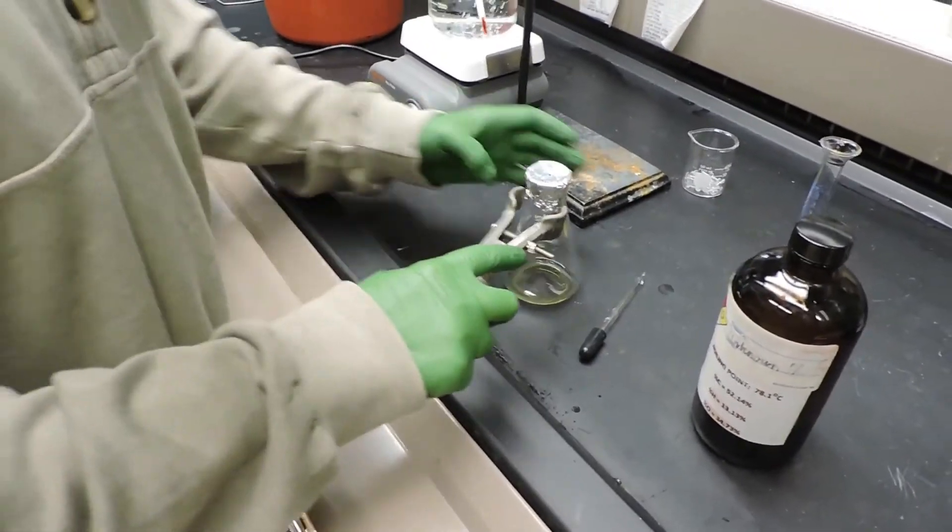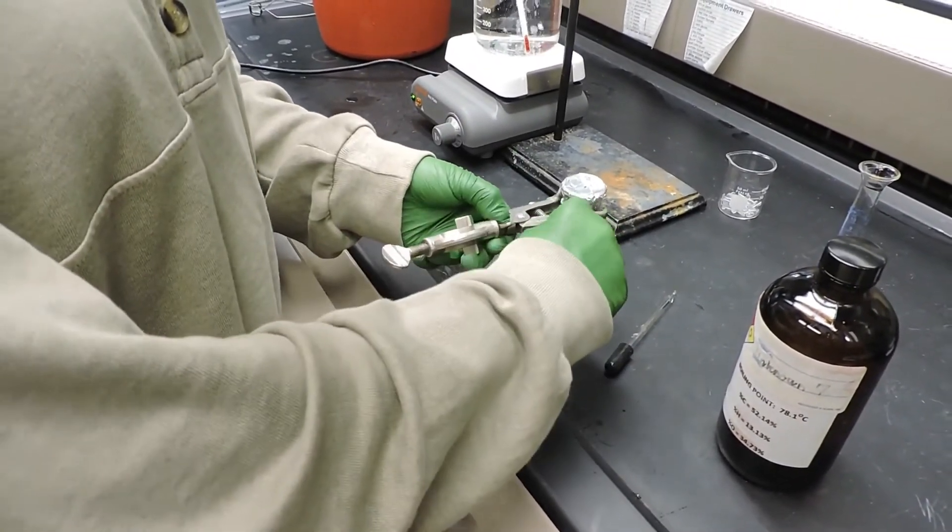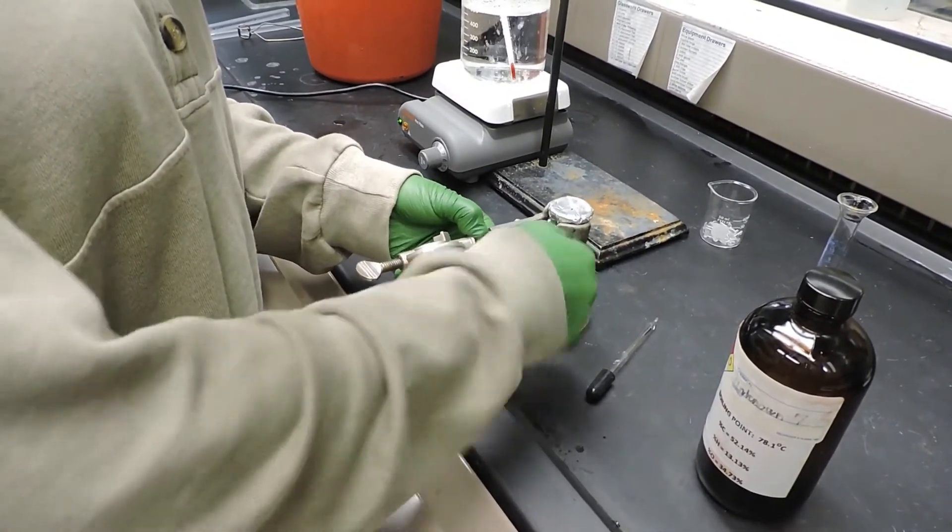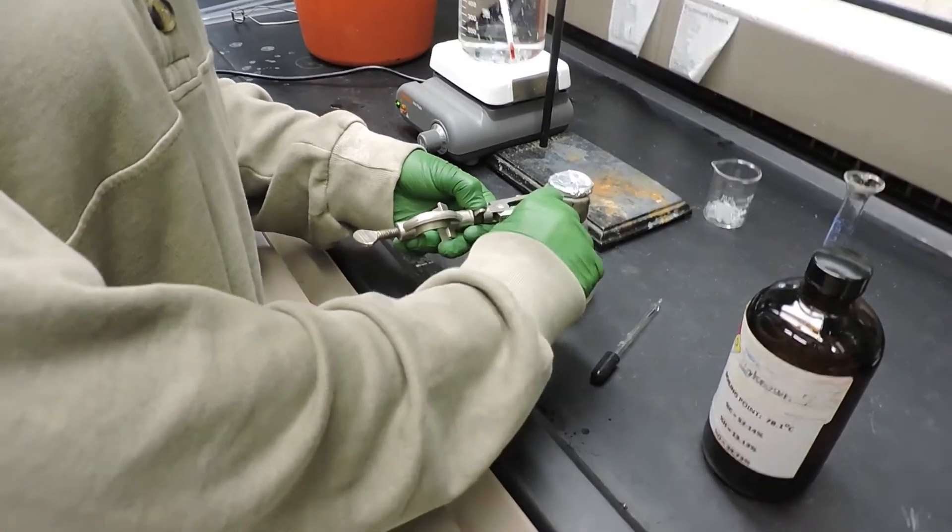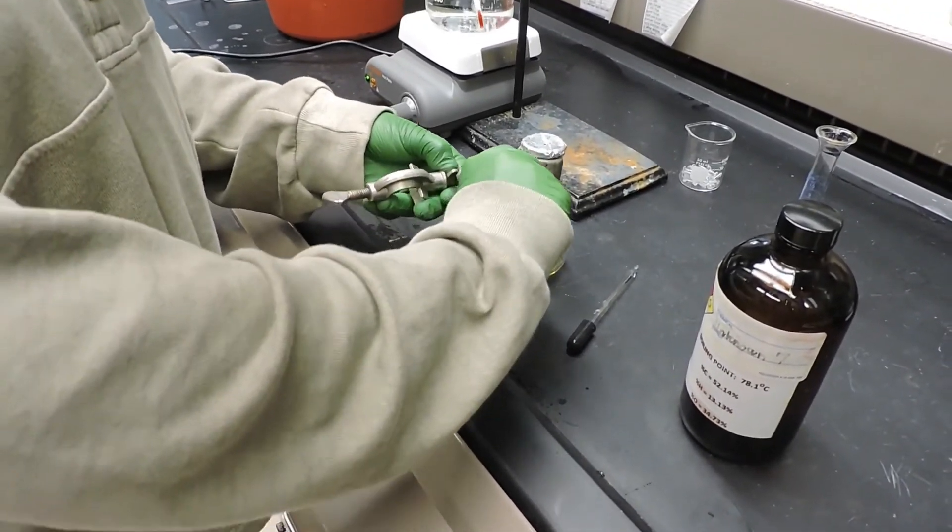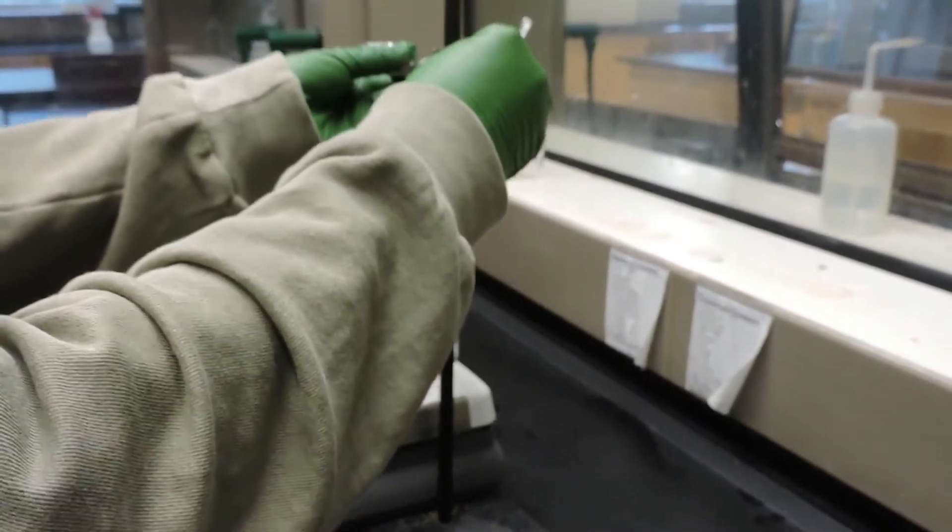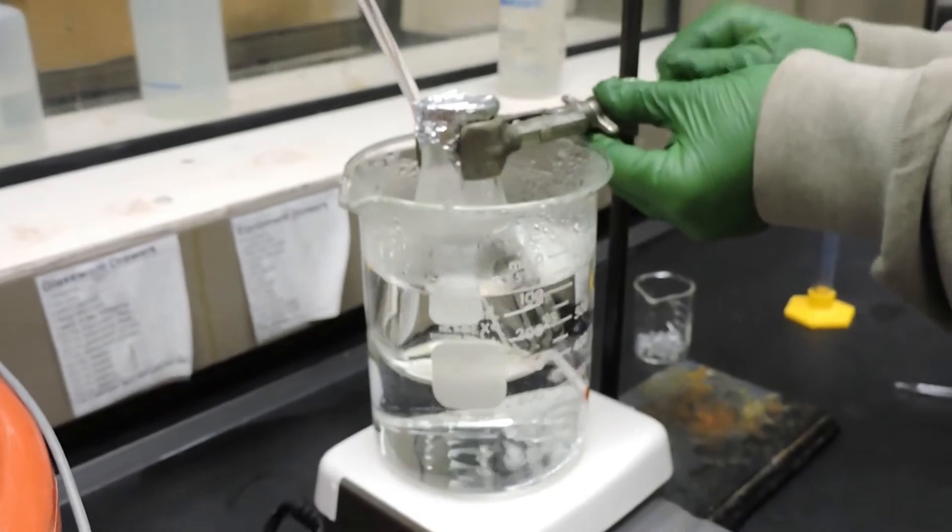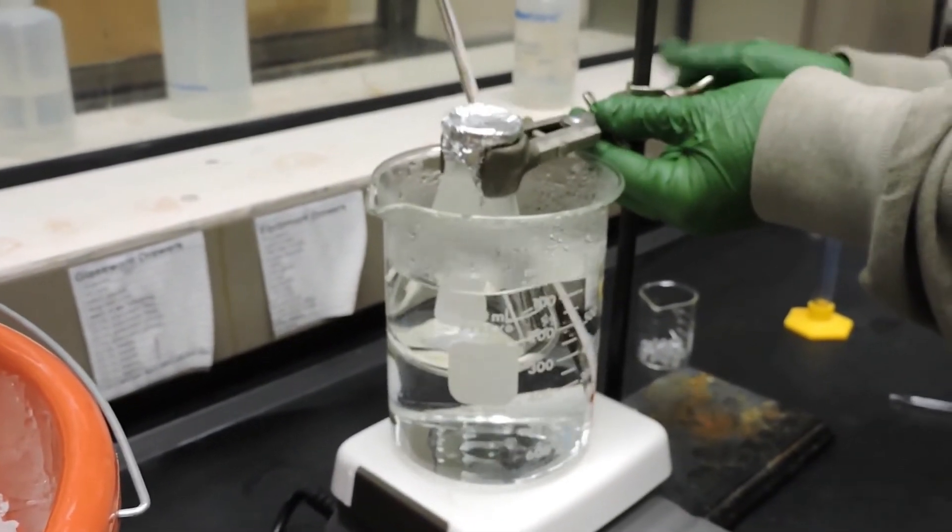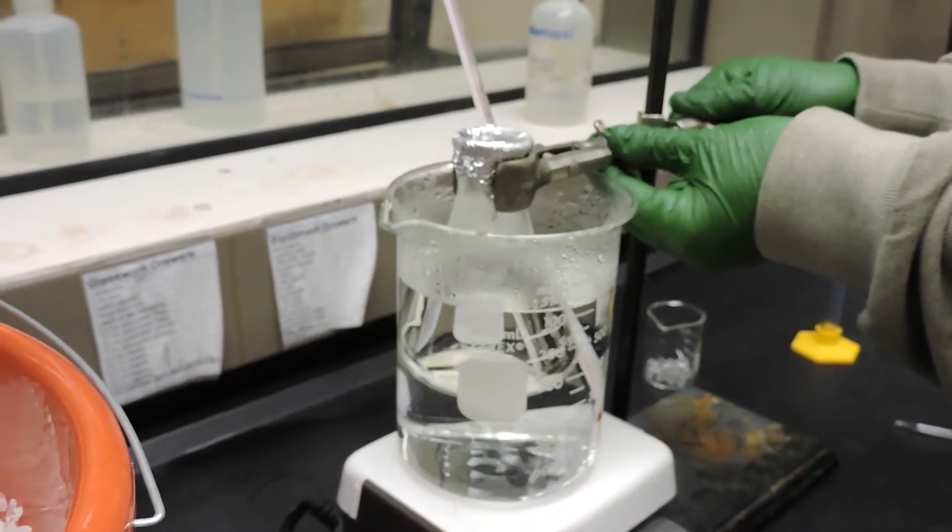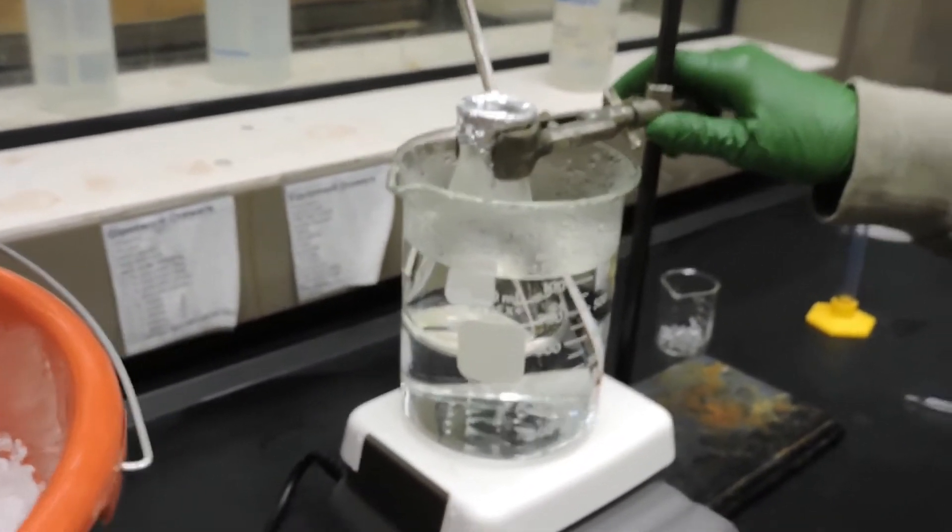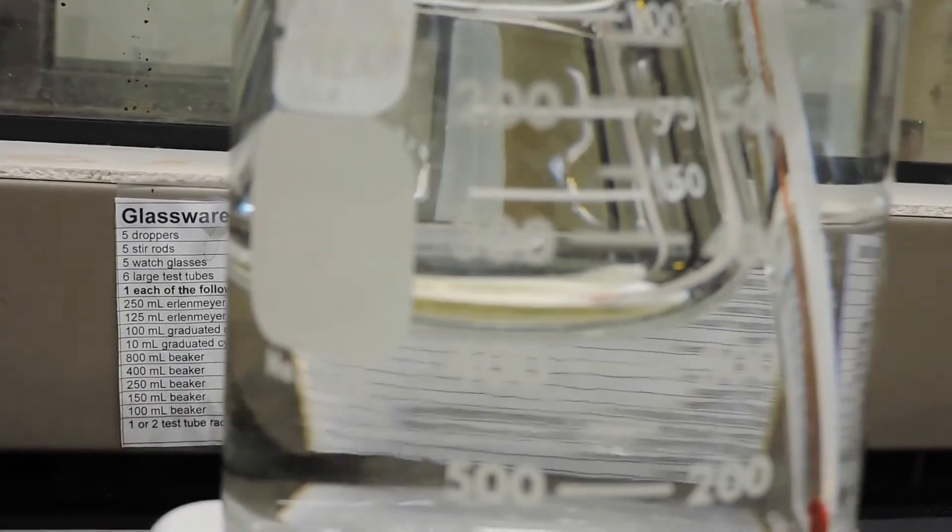We'll clamp the Erlenmeyer flask into the 100 degree Celsius water bath, submerging the flask as much as possible without getting any water or vapor in the flask. We will heat the solution inside until it has completely evaporated.